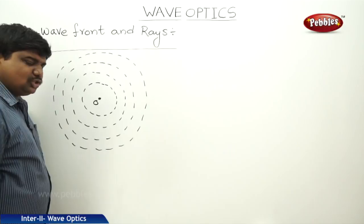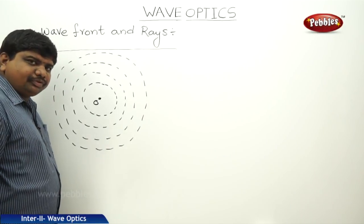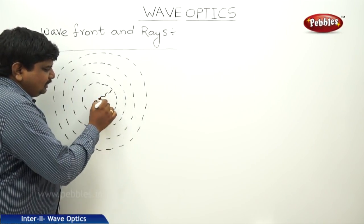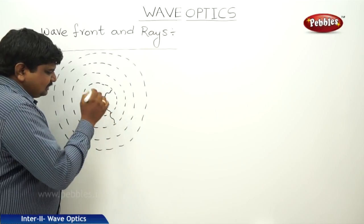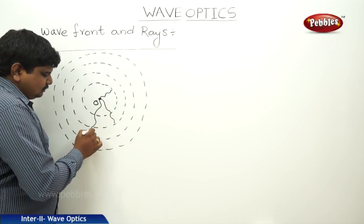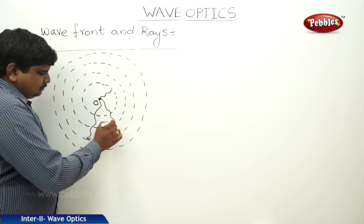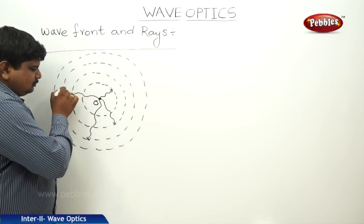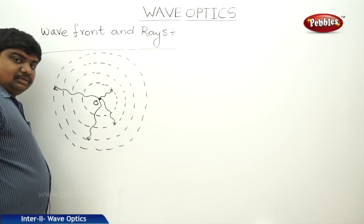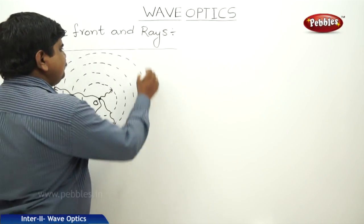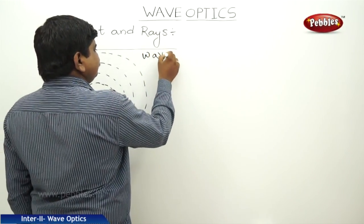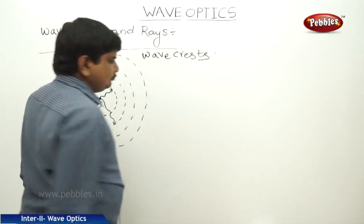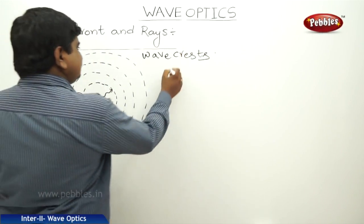This is the point of disturbance. From this point, this disturbance is in a wave form. It was transferred to a long distance. These are all said to be wave crests or energy crests.